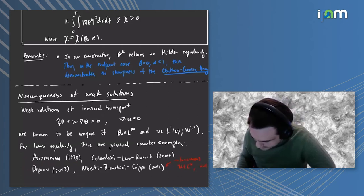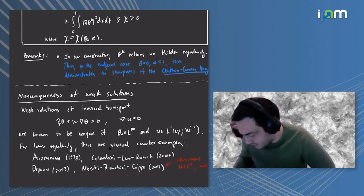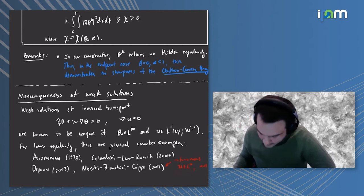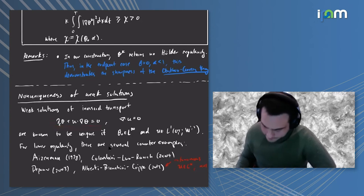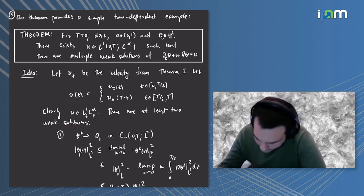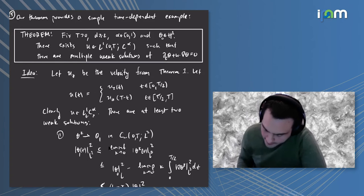At least it goes back to Aizenman and then there are many references. Let me highlight this one: Alberti, Bianchini, and Crippa give an example of an autonomous divergence-free velocity field which is C^α for any alpha less than one which has the property that weak solutions of this system are not unique.